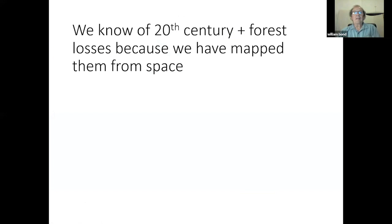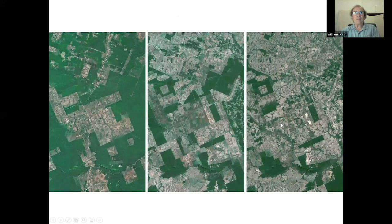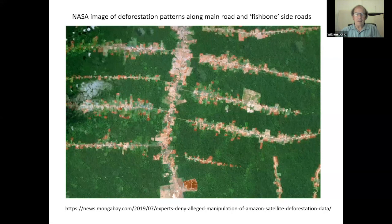We do have real evidence for deforestation in the 20th century — we can see forest losses because we have satellite imagery. You can see the massive impact of human settlements gobbling up nature. In the Amazon, you can see what happens when you put a road through: side roads develop, and these herringbone patterns of deforestation are a major concern.